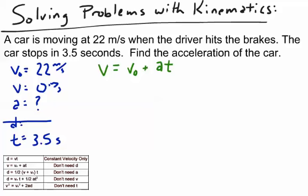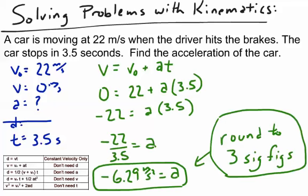Then I substitute the numbers that I know, and then I just have to solve it. So I subtract 22 from both sides, divide by 3.5. I'm going to round my answer to three significant figures. And so the answer is the acceleration is negative 6.29 meters per second squared.